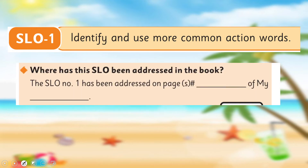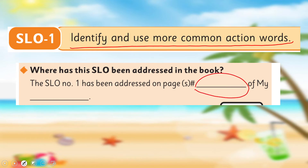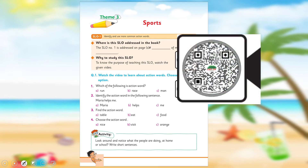Ab aapne karna yeh hai: first of all, is SLO ko apni book mein search karna hai, aur jis page par yeh SLO milta hai us page ka number yahan likhna hai. After that, aapne is QR code ko scan karna hai aur is ke saath attached video lecture ko bahut ghour se sunna hai. And after understanding all the concepts, aapne is page ko apne remedy pack mein complete karna hai.